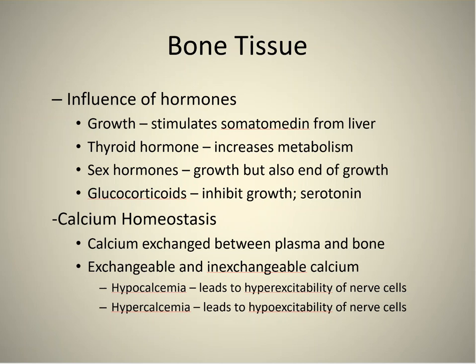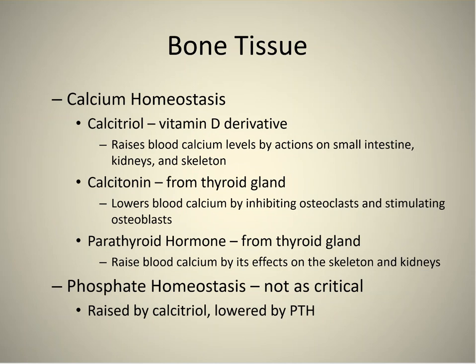Hypocalcemia — too little calcium — leads to hyperexcitability of your cells. Hypercalcemia — too much calcium — leads to hypoexcitability of your cells. Slide 20: calcitriol (vitamin D) raises blood calcium by increasing calcium absorption in the small intestines, reducing calcium loss in the kidneys, and stimulating osteoclasts to release calcium from the skeleton. Calcitonin lowers blood calcium by inhibiting osteoclasts and stimulating osteoblasts. Parathyroid hormone raises blood calcium through effects on the skeleton and kidneys.